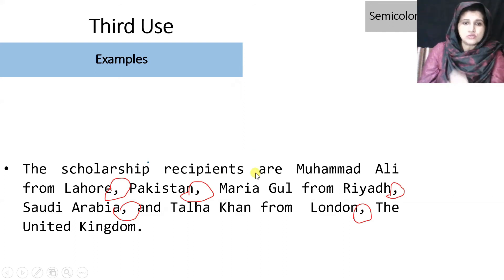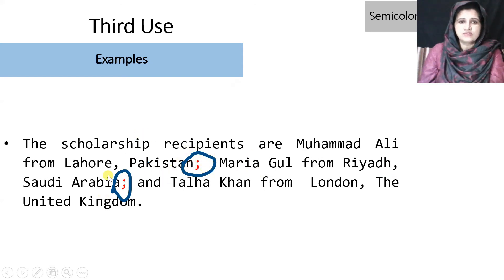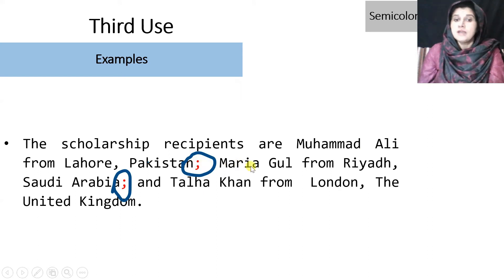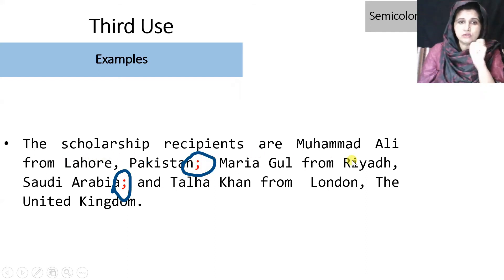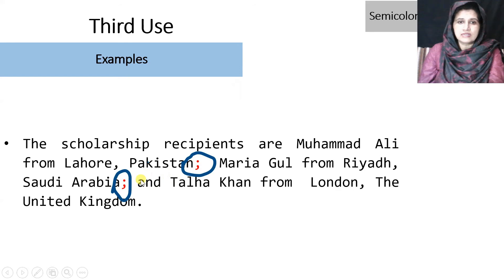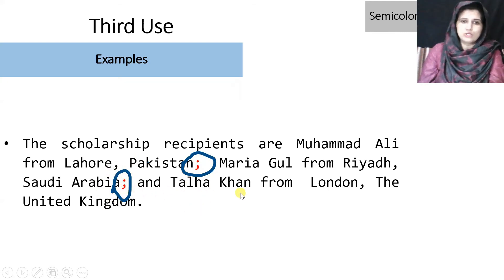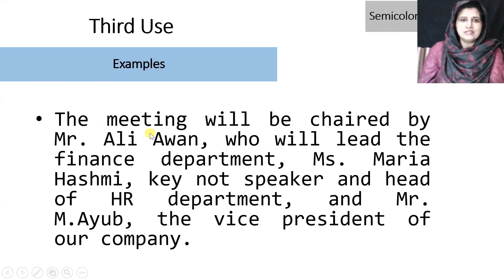To make the job of the reader easier, we replace some commas with semicolons to separate items from each other — for example, separating Muhammad Ali from Lahore, Pakistan from Maria Gulf from Riyal, Saudi Arabia. After adding semicolons, there is no more confusion; the ideas do not mix up. We also add a semicolon before the conjunction 'and' to show we are still separating the list.